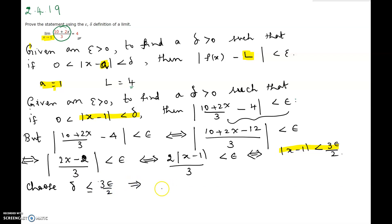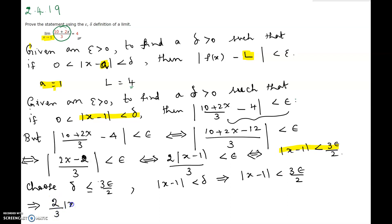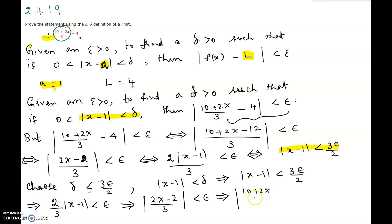If delta is chosen as 3epsilon / 2, then |x - 1| < delta would mean |x - 1| < 3epsilon / 2, which in turn means (2/3)|x - 1| < epsilon. Retracing the steps backwards: |2x - 2| / 3 < epsilon, which means |(10 + 2x)/3 - 4| < epsilon.